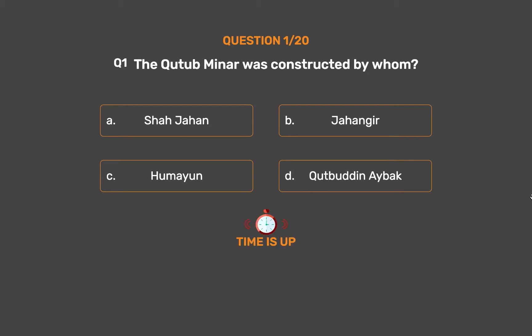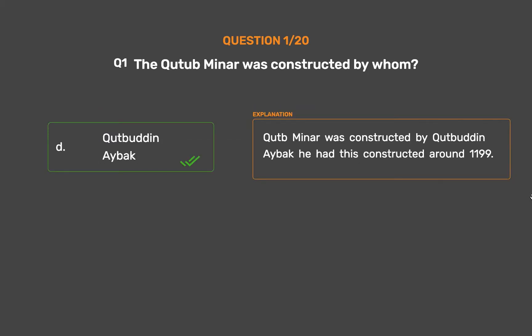The correct answer is Option D: Qutubuddin Aibak. Qutub Minar was constructed by Qutubuddin Aibak. He had this constructed around 1199.